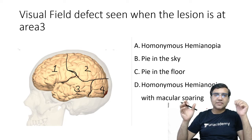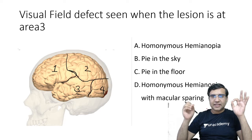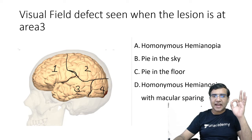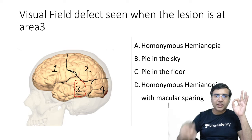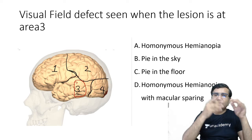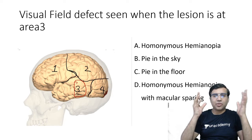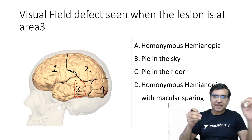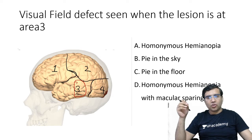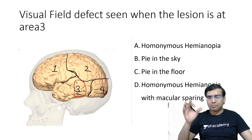The first question: what is the visual field defect seen when the lesion is at area 3? The options are homonymous hemianopia, pie in the sky, pie in the floor, or homonymous hemianopia with macular sparing. What should be the answer?